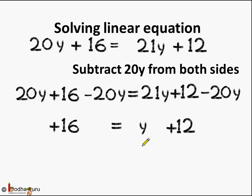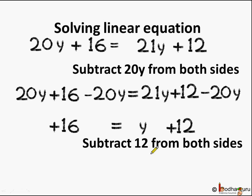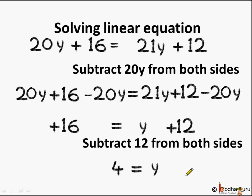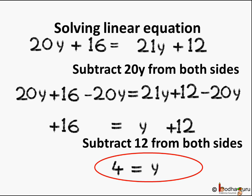Here we see y is on the RHS. To make y alone, we subtract 12 from both sides: 16 minus 12 is 4, and y plus 12 minus 12 leaves just y. So we get 4 equal to y, which is the same as y equal to 4. Remember children, whether you write 4 equal to y or y equal to 4, it's the same. The solution is y is equal to 4.